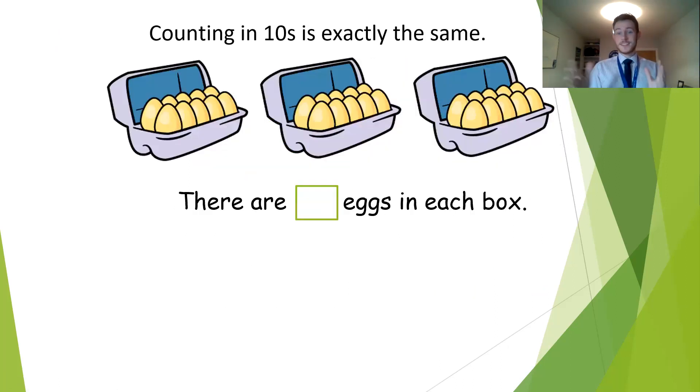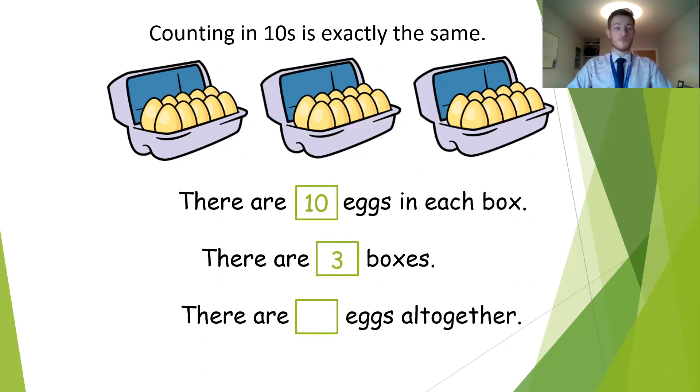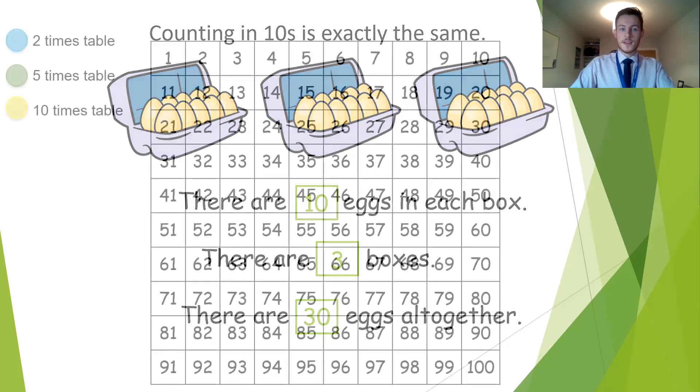And counting in ten is exactly the same. Each one of these boxes contains ten lots of eggs. So we can have a look. We've got ten in each of the boxes. They're all exactly the same. So there are ten eggs in each box. How many boxes are there? We can count 1, 2, 3. We've got three boxes. So then how many eggs are all together? Rather than us counting each individual one, we're going to just do jumps of ten. Ten, 20, 30. We've got 30 all together.